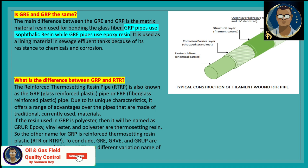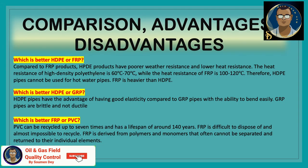What is the difference between GRP and RTR? Reinforced thermosetting resin pipe (RTRP) is also known as GRP (glass reinforced plastic) or FRP (fiberglass reinforced plastic pipe). It offers a range of advantages over traditional materials. If the resin used in GRP is polyester, it is named accordingly; epoxy, vinyl ester, and polyester are all thermosetting resins. Therefore, another name for GRP is reinforced thermosetting resin pipe, or RTR. To conclude: GRE and GRP are different types within the FRP family, and RTR is a different variation name for GRP.